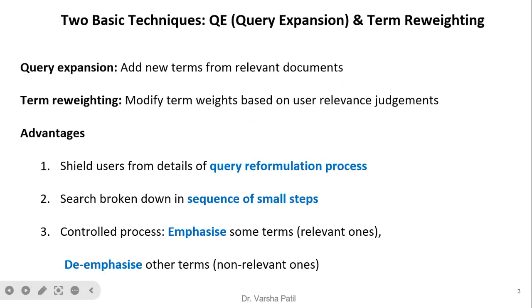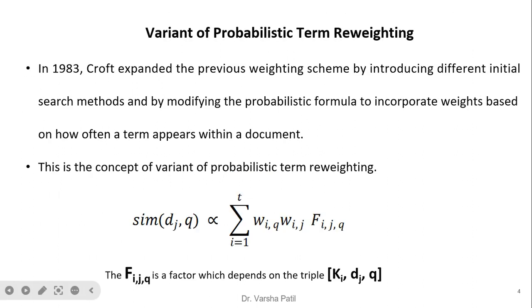In probabilistic term reweighting, two basic techniques exist: query expansion and term reweighting. In query expansion, new terms are added from relevant documents. In term reweighting, term weights are modified based on user relevance judgments. The advantage is that it shields the user from the details of query reformulation, breaks the search into a sequence of small steps, emphasizes terms from relevant documents, and de-emphasizes terms from non-relevant documents.